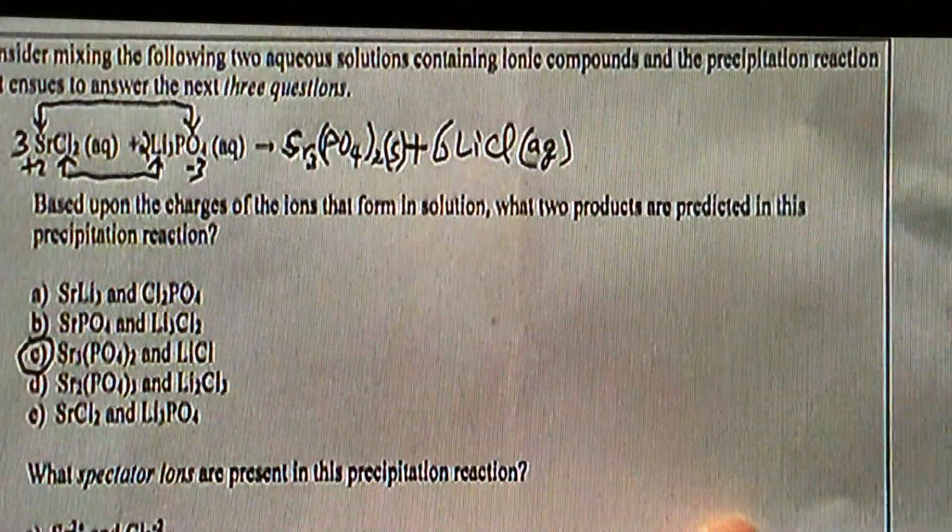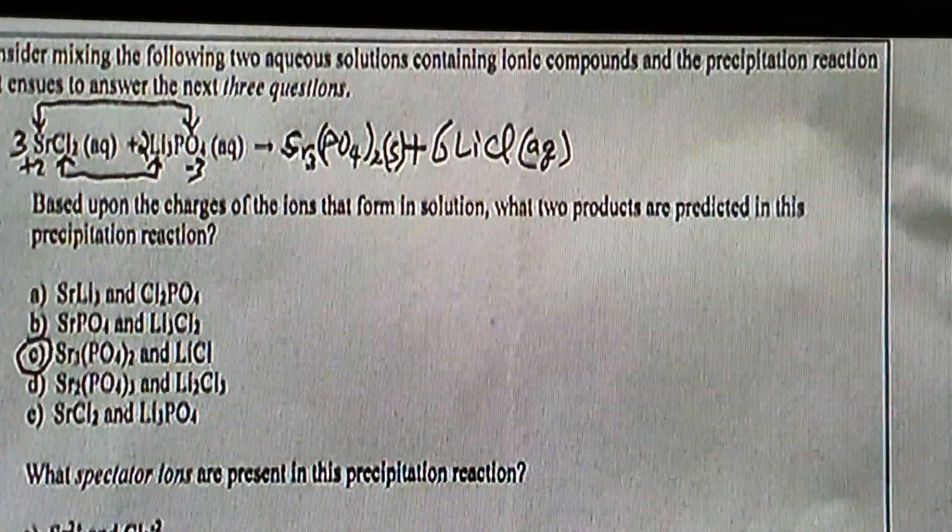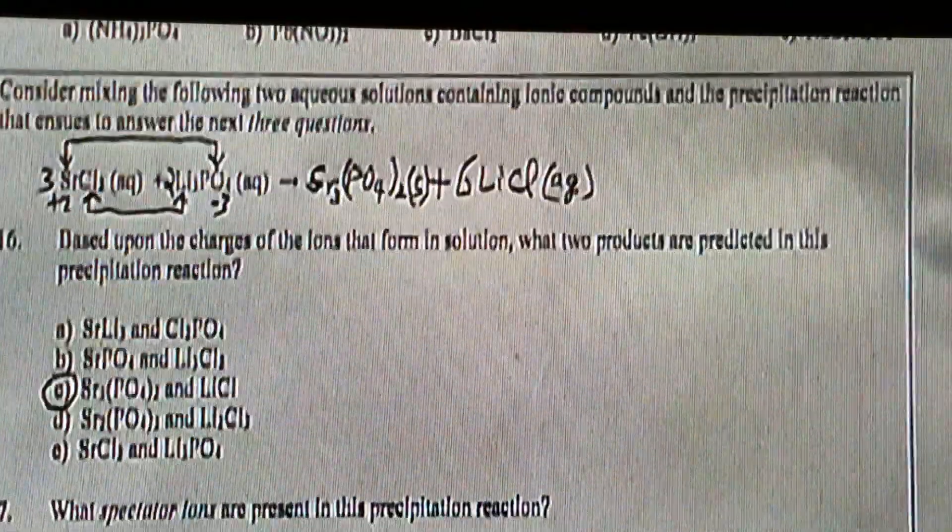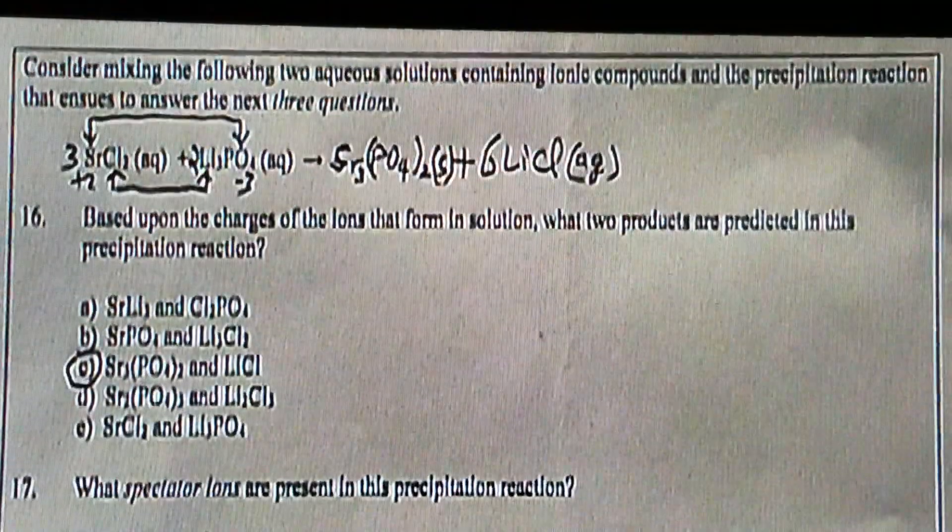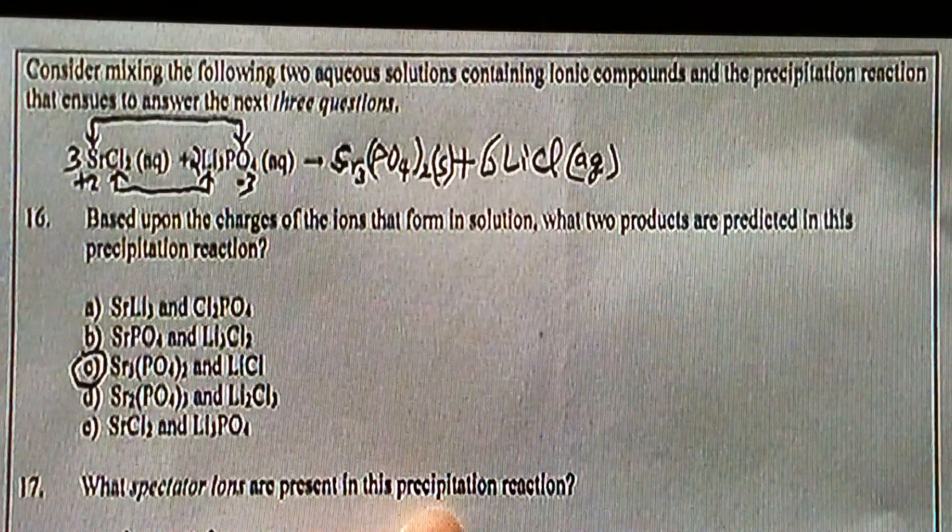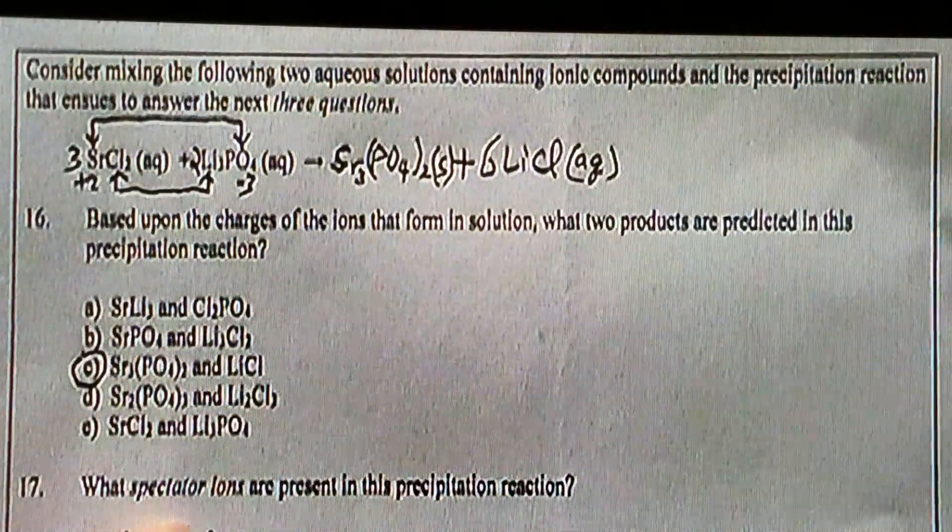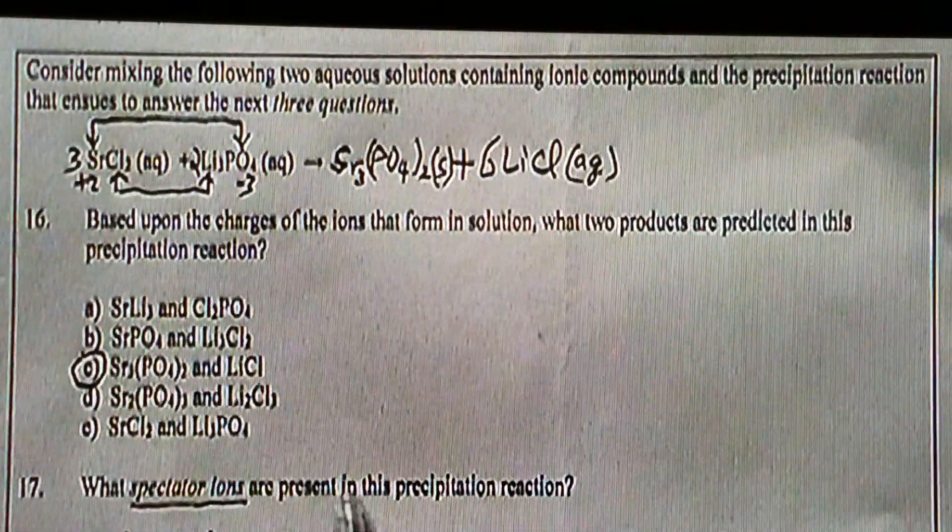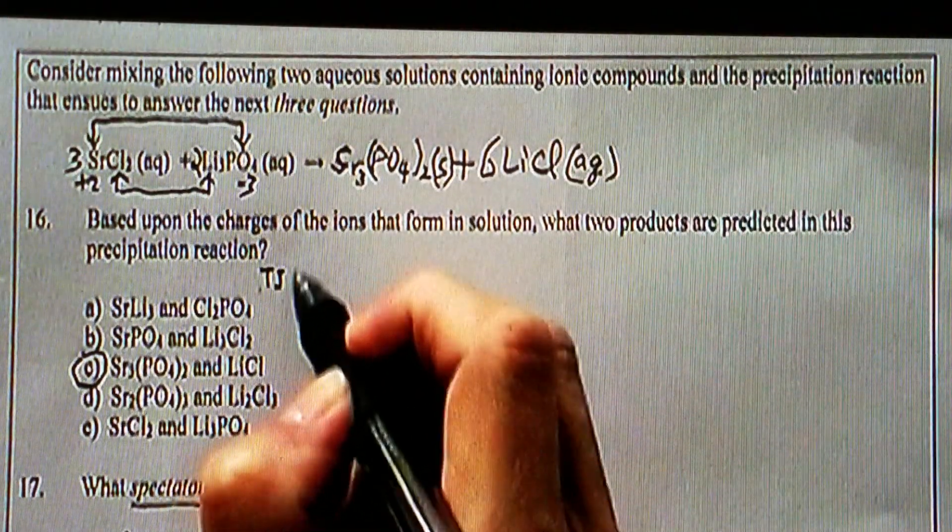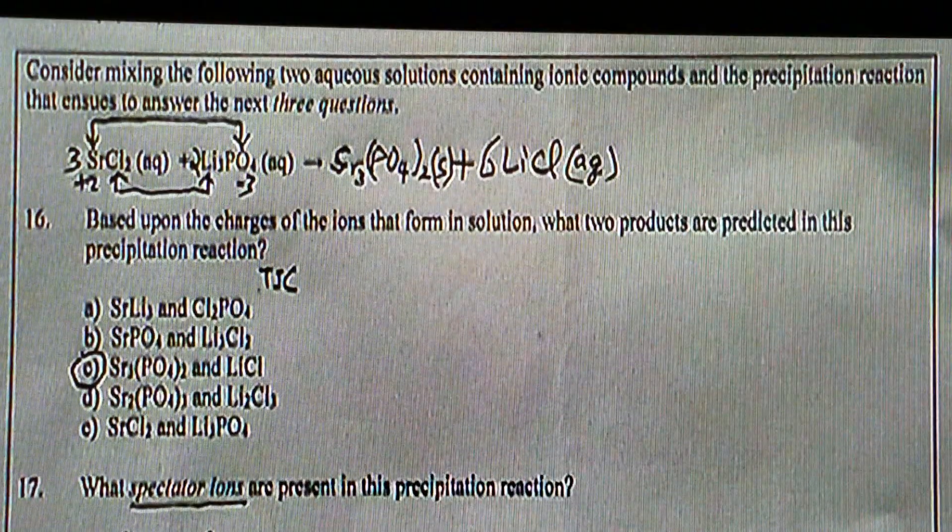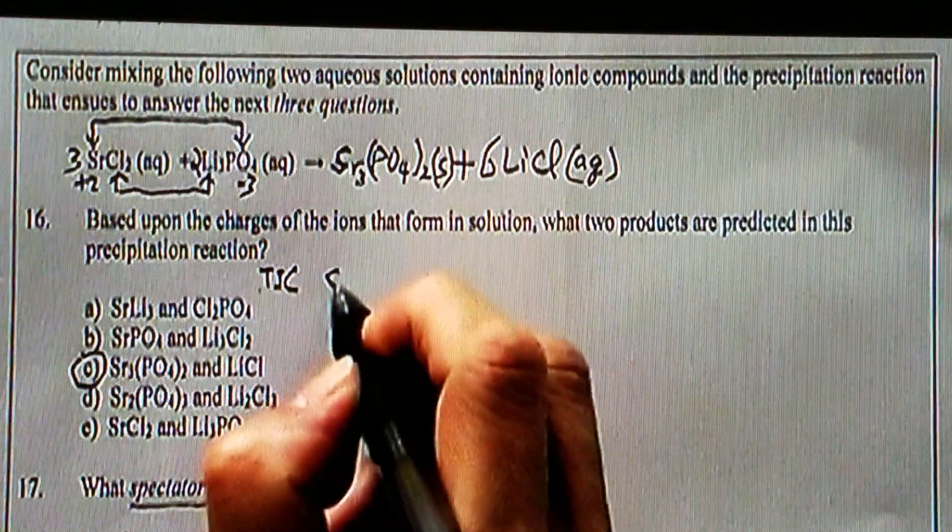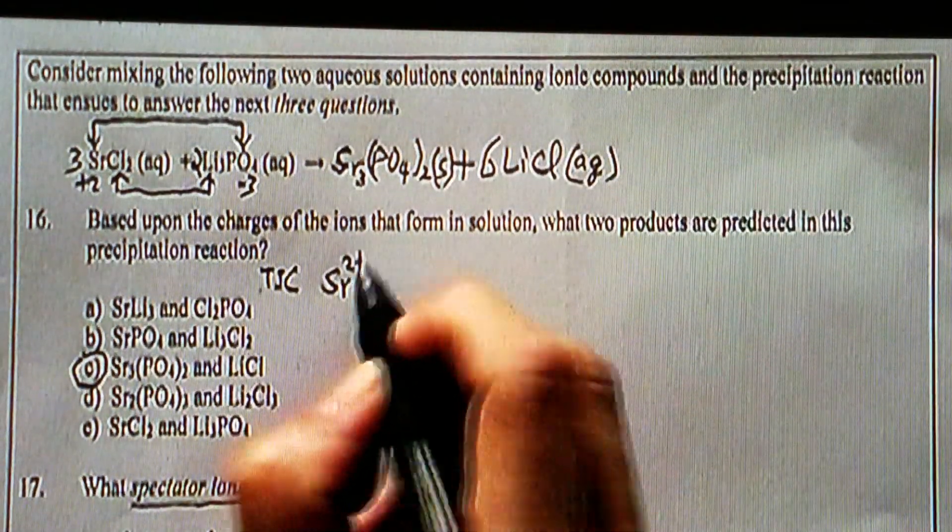And now let's go to question 17. What spectator ions are present in this precipitation reaction? In order to find all the spectator ions, we need to write the total ionic equation. So we start with the first reactant. Since it's aqueous solution, we know it has to be...